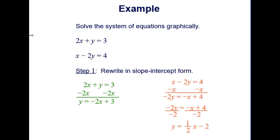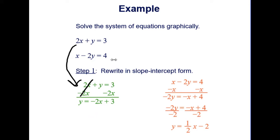Let's look at another example: solve the system of equations 2x plus y equals 3 and x minus 2y equals 4. Both are not in slope-intercept form. We transform the first by subtracting 2x from both sides, making it y equals negative 2x plus 3. For the second, we subtract x from both sides and divide everything by negative 2, creating y equals one-half x minus 2.